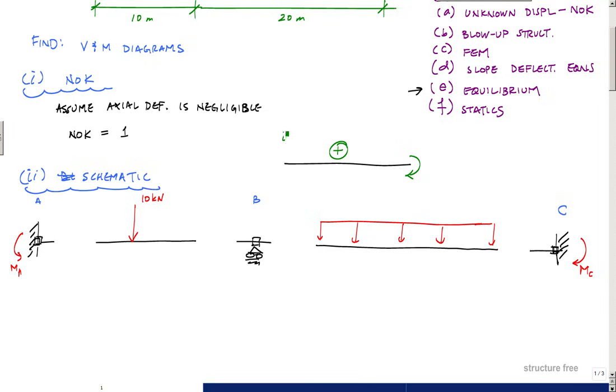It doesn't matter which end you're on. If this is end I and here's end J, this is M_JI - this is a positive moment here - and this is M_IJ right here.